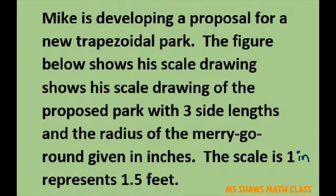Hi everyone. Mike is developing a proposal for a new trapezoid park. The figure on the next slide shows his scale drawing of the proposed park with three side lengths and the radius of the merry-go-round given in inches. And what we really need to know is the scale is one inch represents 1.5 feet. Just remember that.